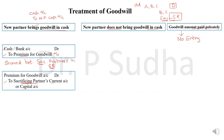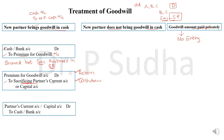The sacrificing partners may decide either to retain the goodwill in the business or to withdraw it. If they decide to retain, no further journal entry is needed. But if they decide to withdraw — meaning they take their portion of goodwill as cash — then one more entry is needed: partner's current account or capital account debit to cash or bank account. These are the three entries when the new partner brings goodwill in cash.